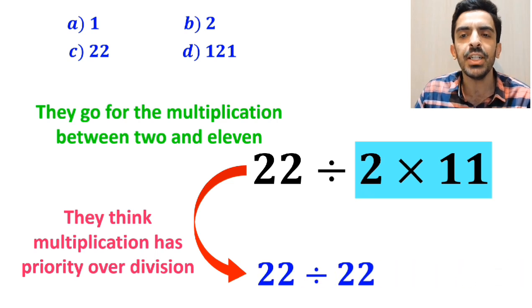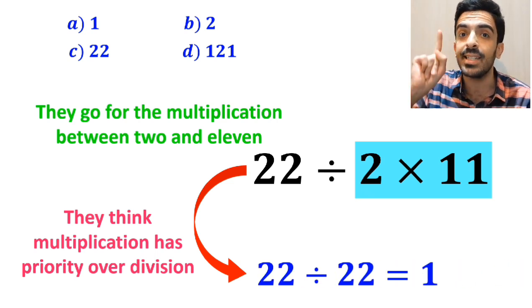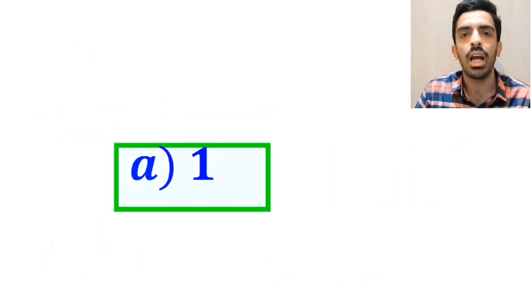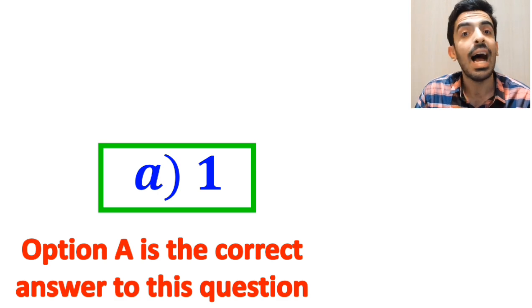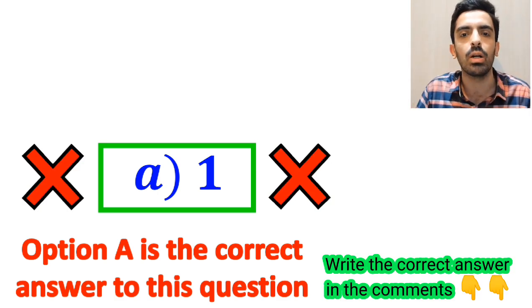So this expression simplifies to 22 divided by 22, which finally gives them the answer 1. And immediately, they quickly say that option A is the correct answer to this question. However, this answer is absolutely wrong.